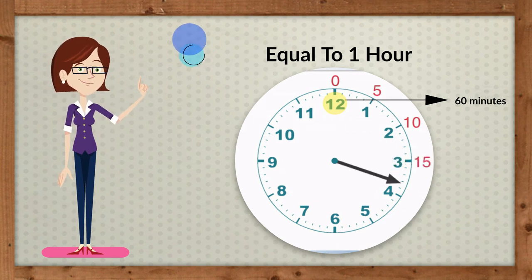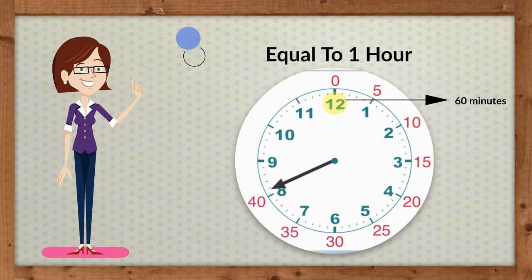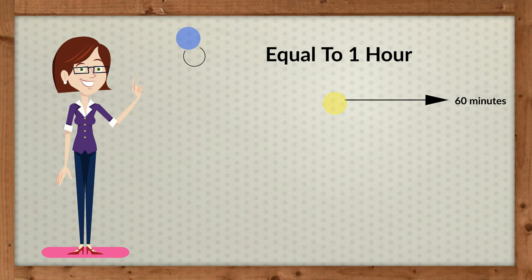Therefore, when the minute hand completes the circle once, the hour hand moves from one number to the next.